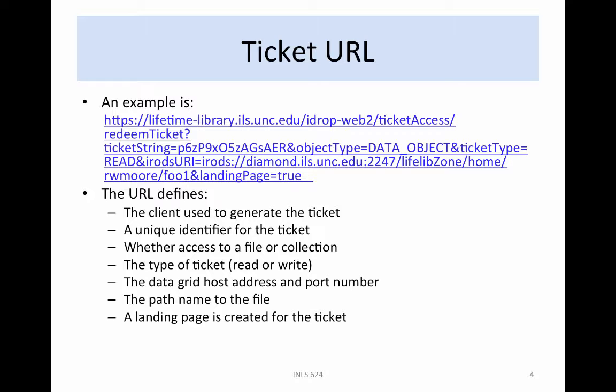An example of the URL created for a ticket is shown here. The ticket contains information about the client that created the ticket (iDropWeb), a unique identifier for the ticket (ticket string equals P6, etc.), whether access is given to a file or a collection (object type: data object), the type of ticket (read or write), the data grid host address (diamond.ils.unc.edu), the port number (2247), the path name to the file (lifelivezonehomerwmorphu1), and whether a landing page is created for accessing the file.